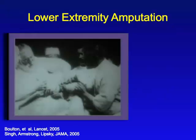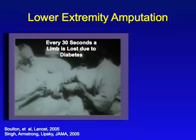Lower extremity amputations in persons with diabetes is a formidable problem. In this slide, you're seeing a slide captured from the first video of a surgery — Ernst von Bergman in 1901 in Berlin performing a lower extremity amputation. It has been said, in fact on the cover of The Lancet in November 2005, that somewhere in the world, every 30 seconds, a limb is lost as a consequence of diabetes.